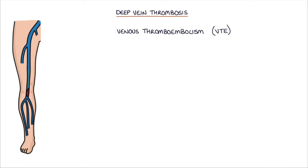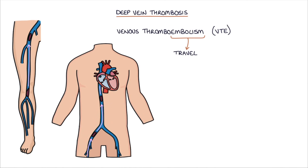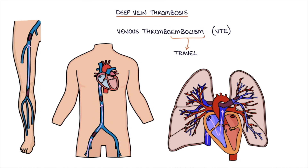When a thrombus develops in the venous circulation, it's called a deep vein thrombosis or a DVT. Once a thrombus has developed, it can travel or embolise from the deep veins through the right side of the heart and into the lungs, where it becomes lodged in the pulmonary arteries. This blocks blood flow to the areas of the lungs and is called a pulmonary embolism or PE.